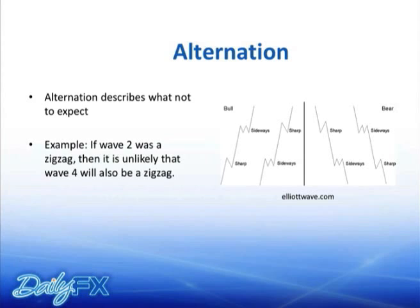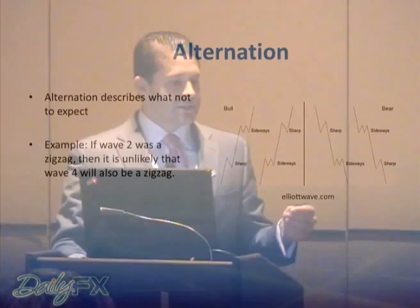Alternation is very useful in that you understand what not to expect. If you know you're in some sort of third wave — you usually know because they're very strong moves — you knew to expect probably a shallower retracement rather than a deep one. So that holds: if wave two is sharp or a zigzag, then wave four will probably be a flat or a triangle. It's not a rule but it's a guideline — it often holds. It makes sense because a very strong trend is deemed even stronger when the ensuing correction is flatter.